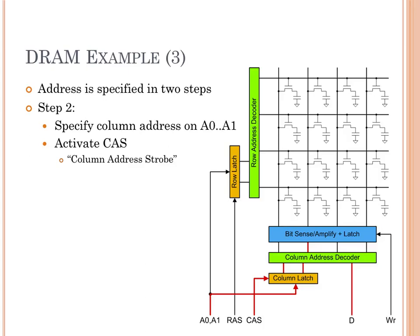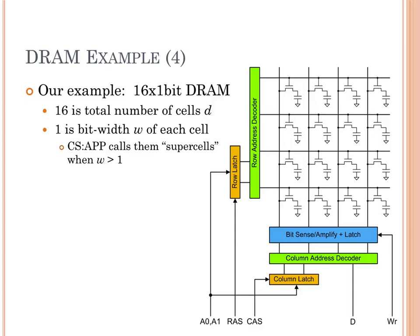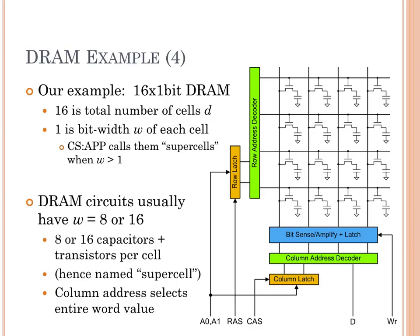Wow, that's a lot of steps — way more clocks than accessing SRAM. With SRAM you give the whole address in one shot and data comes out. With DRAM you have to give this part and that part, do this line and that line, and then data comes out. So DRAM is slower to access. Each of these vertical bit lines would actually be a bus, not just a single line, so we could read all 16 bits or 8 bits at a time.